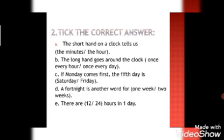Now look at the question number two, tick the correct answer. The short hand on a clock tells us, what does it tell us? The hour. The hour tells us. Yes, the hour. We will click on which one? Hour. The short hand tells us the hour.